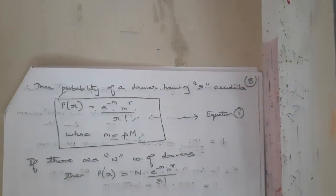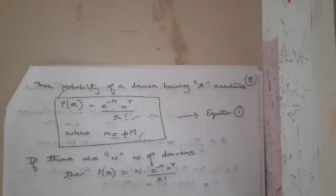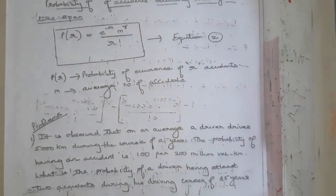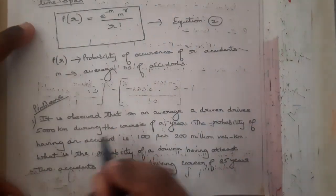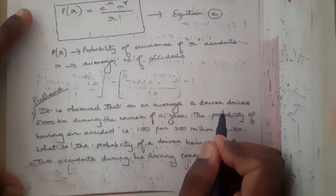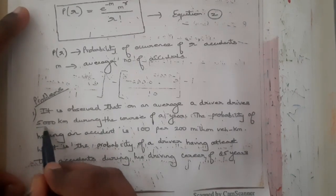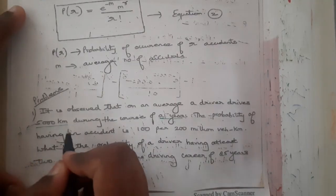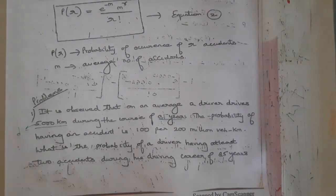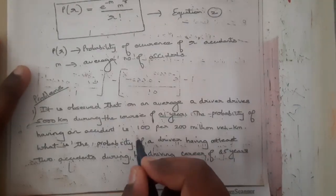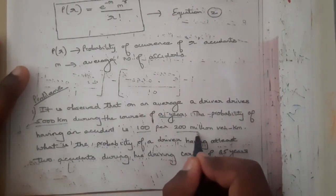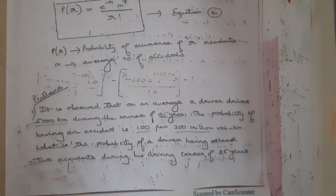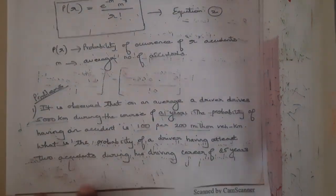Also remember that m = p × M (capital M). Now for the example: it is observed that on average a driver drives 500 kilometers per year. The probability of having an accident is 100 per 200 million kilometers — a very small probability.